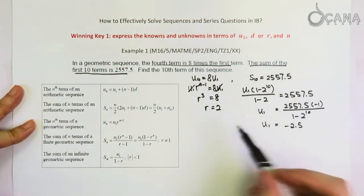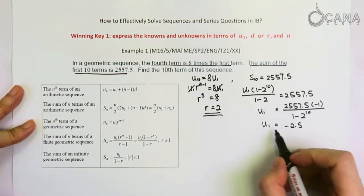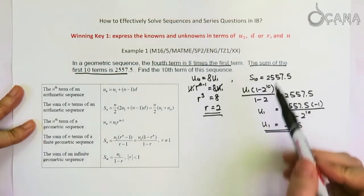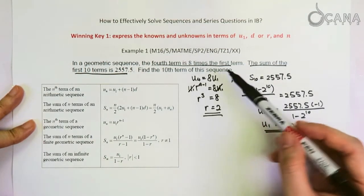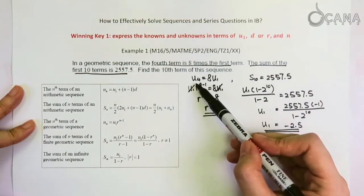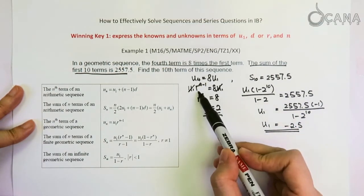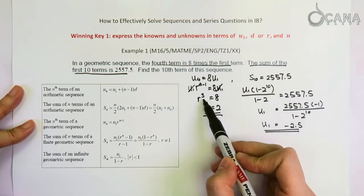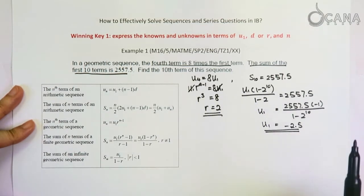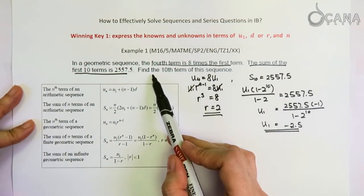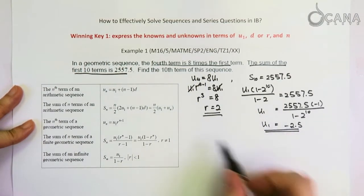By now we found the common ratio and first term from the two pieces of information given. And we've done so by expressing those information in terms of the first term and the common ratio and number of terms.